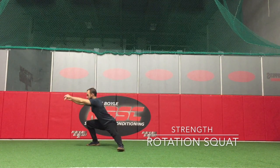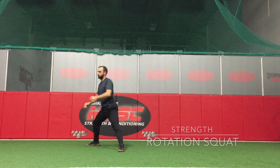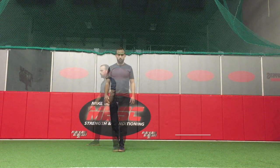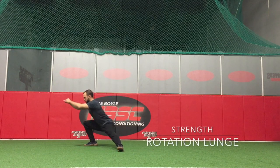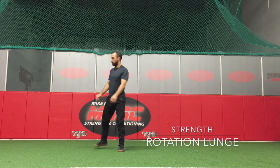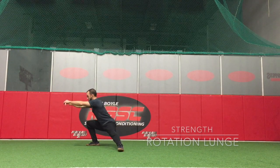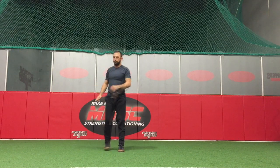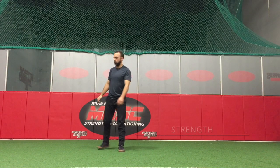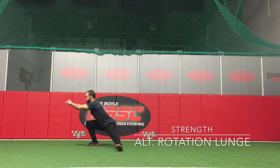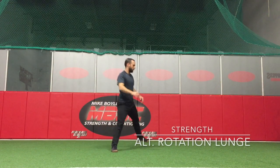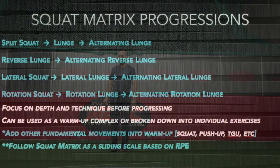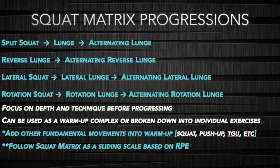Next we have the rotation squat. Here I start with my feet together and step out and back so that I have about a 90-degree angle between feet. From there, the rotation lunge, and finally the alternating rotation lunge, left to right. And there you have it — squat matrix progressions.